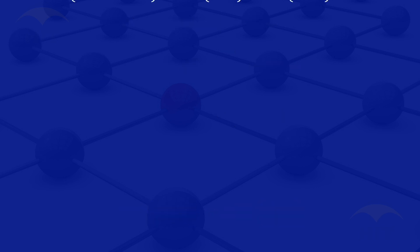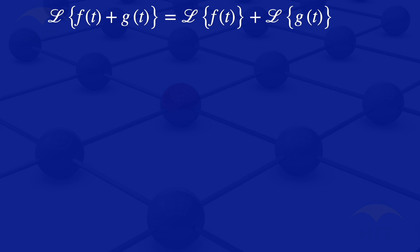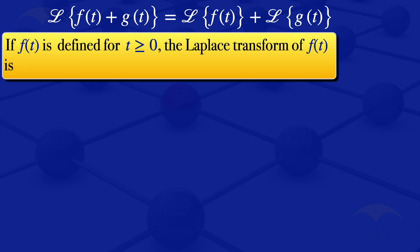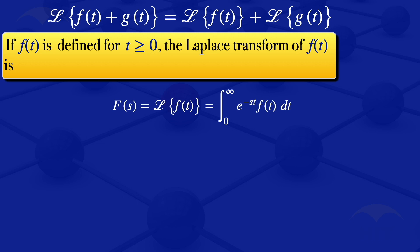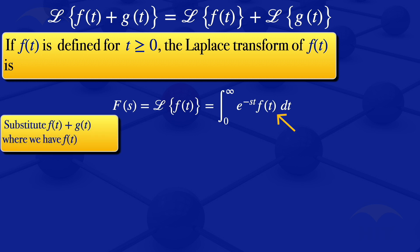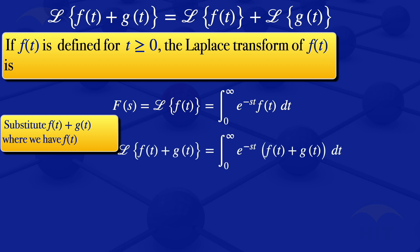We can now move on to the second part, where we want to prove that the Laplace transform of F of T plus G of T equals the Laplace transform of F of T plus the Laplace transform of G of T. To prove this, we use the definition again. If F of T is defined for T greater than or equal to zero, the Laplace transform of F of T, denoted F of S, is the integral from zero to infinity of e to the minus ST times F of T dT. Here, we substitute F of T plus G of T, so the Laplace transform of F of T plus G of T equals the integral from zero to infinity of e to the minus ST times the quantity F of T plus G of T dT.